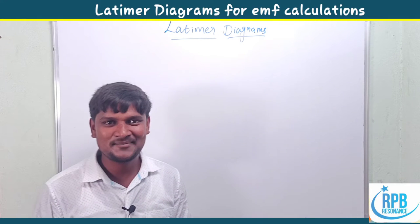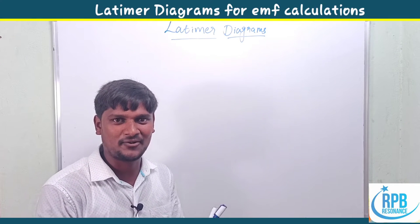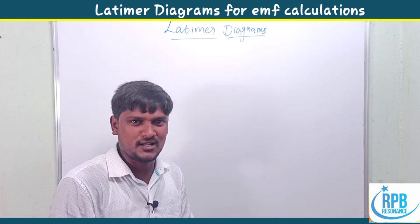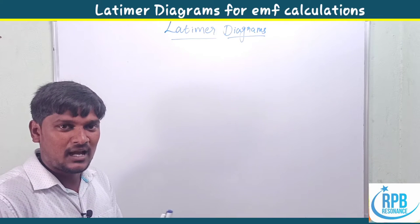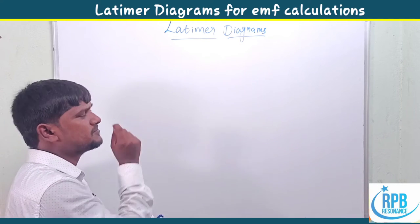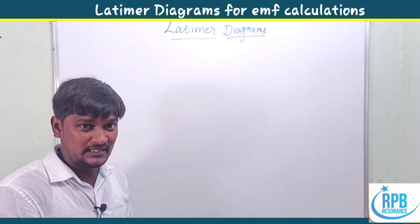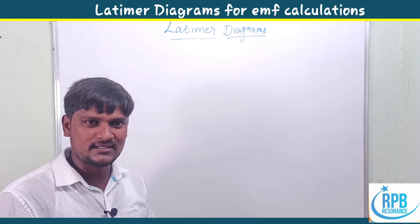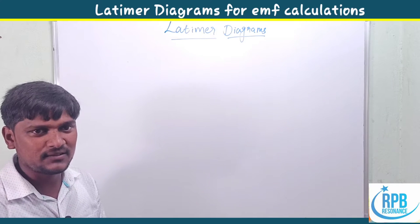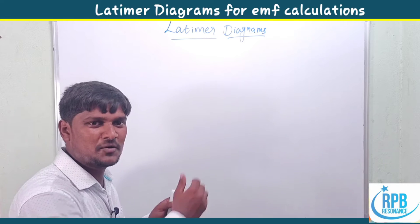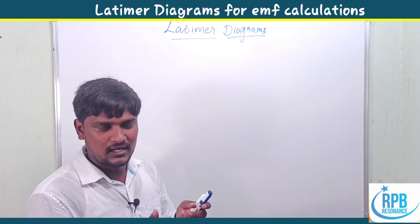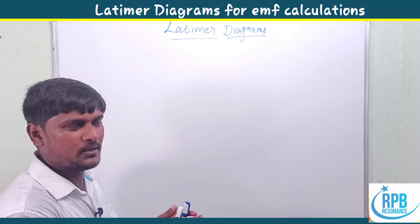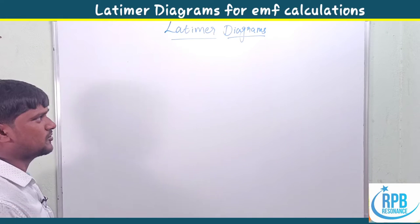Welcome to the paper resonance commission. Let us continue our lecture on electrochemistry. Today we are going to deal with one of the best topics for the determination of disproportionation reaction EMF values with the help of Latimer diagrams. This is a very simple trick that saves a lot of time in examinations compared to using the standard formula ΔG = -nFE.